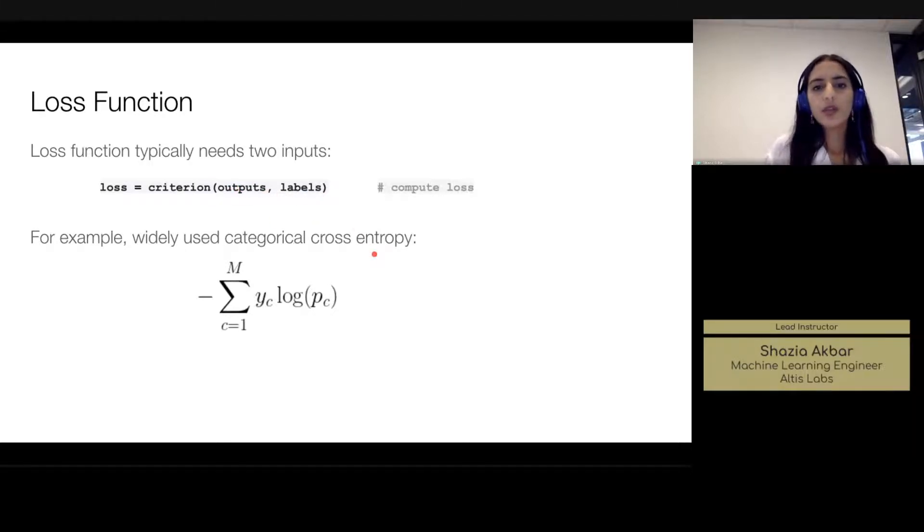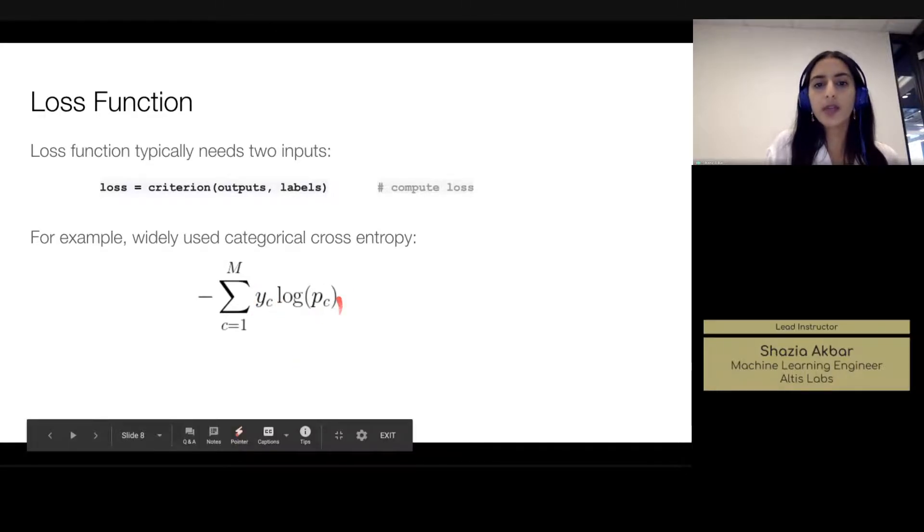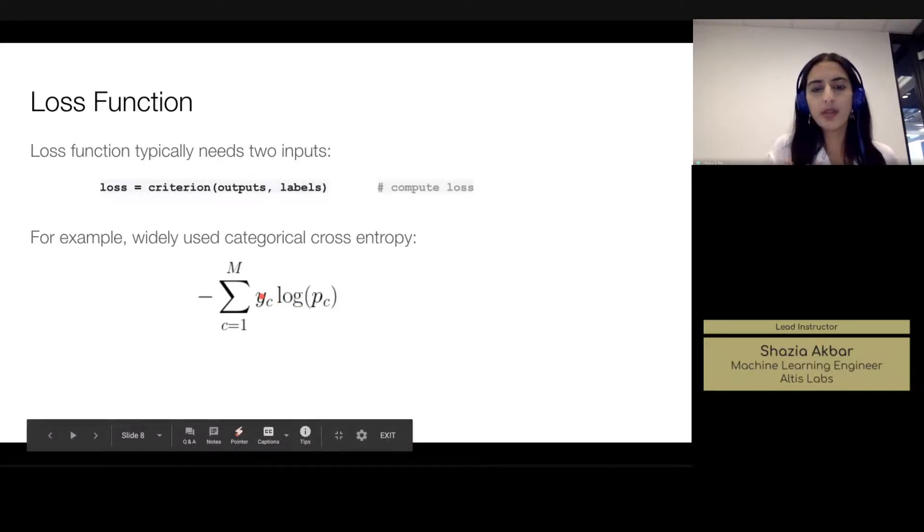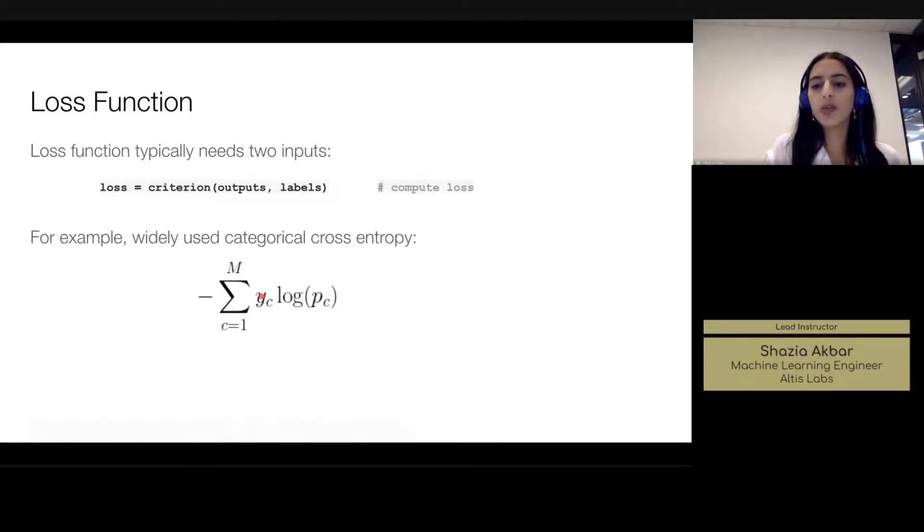Typically what would happen within this function is that we would compute some sort of loss, some sort of mechanism for extracting the error between the outputs and the labels. So a widely used loss function in the deep learning field is cross entropy, and that's shown here for m number of classes. You can clearly see here we have the ground truth labels as y and the predictions coming from the network as p, and you can clearly see that it relies on both in order to compute this cross entropy.